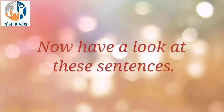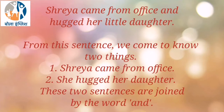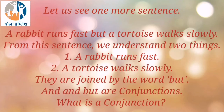Now have a look at these sentences. 'Shreya came from office and hugged her little daughter.' We come to know two things: Shreya came from office, and she hugged her daughter. These two sentences are joined by the word 'and.' Another example: 'A rabbit runs fast, but a tortoise walks slowly.' Here, two things are joined by the word 'but.' And and but are conjunctions.